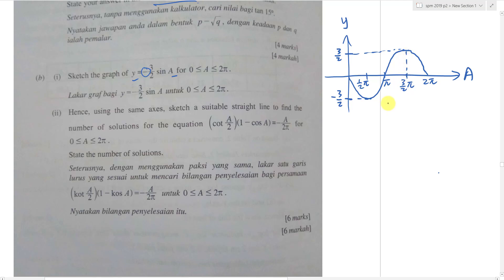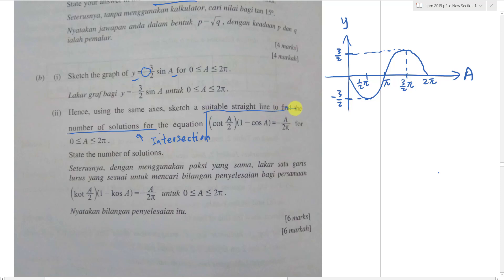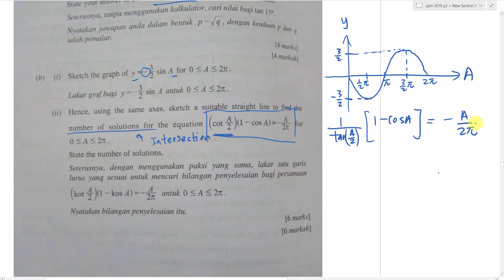Using the same axis, sketch the suitable straight line to find the number of solutions. The number of solutions means the intersection points between the straight line and the sine graph. I need to solve the equation. I see cotangent (a/2), which I can change to 1/tan(a/2). Using the proven result, cotangent (a/2) equals sin a / (1 − cos a).